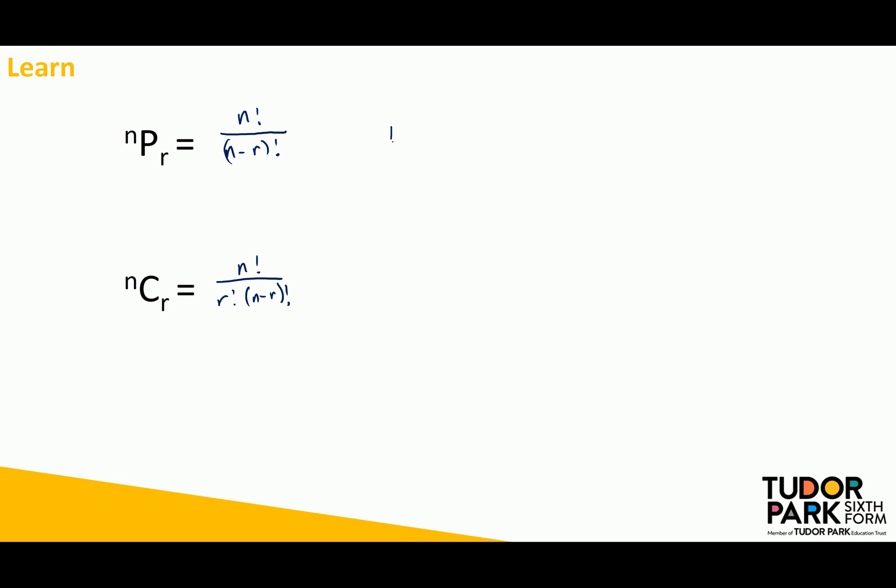As I say on a calculator this can be found just above the times key so this is written down as n p r and this can be found just above the division key which is written down as n c r.